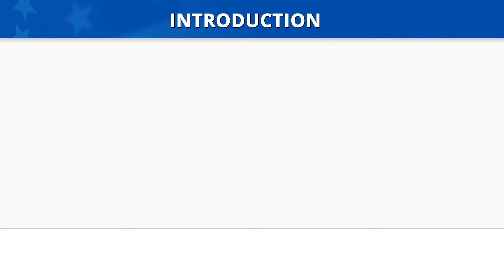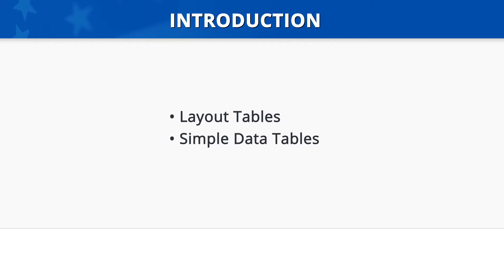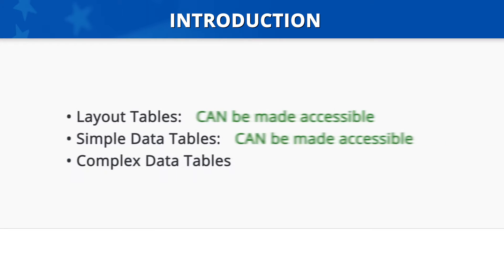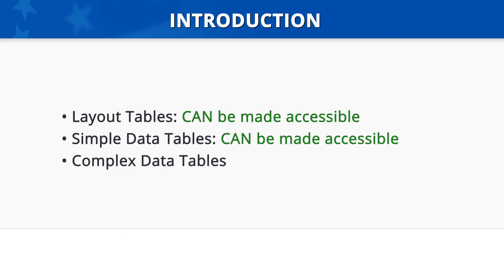Introduction. There are three types of tables that we will discuss: layout tables, simple data tables, and complex data tables. We'll first explain the difference between each type, and then we'll discuss their accessibility. Layout tables and simple data tables can be made accessible in Microsoft Word, but complex data tables cannot.